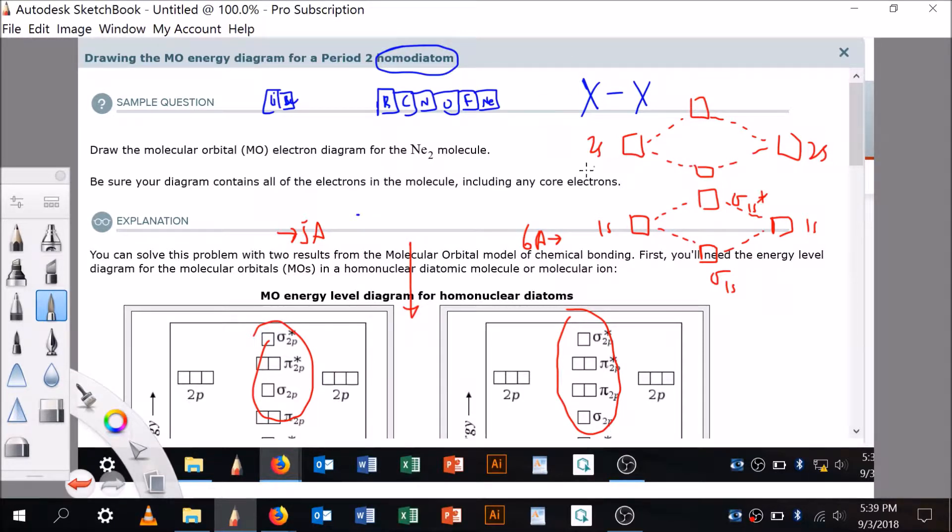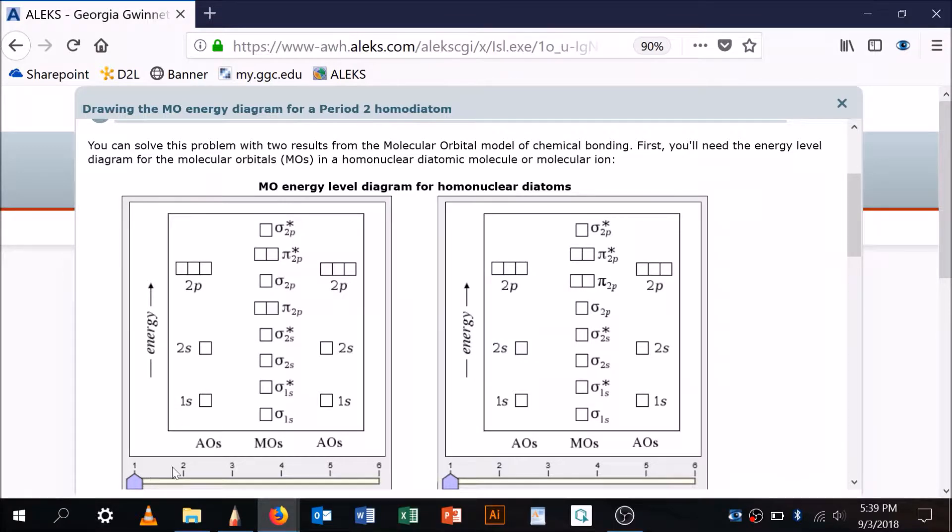As these orbitals get filled, they'll get filled from the lowest energy up. Sigma is going to get filled first. When you're doing these in ALEKS you've got the sliders down below. The first orbital that's going to get filled is those two atomic orbitals, then the next one, and so on. Sigmas are going to get paired and the pis are going to get paired.